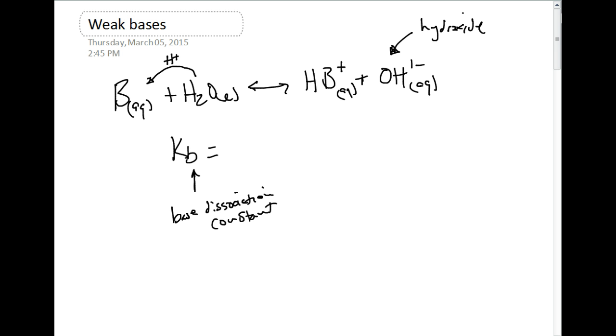For the base dissociation constant, we can write the expression just like we would write the expression for the KA. We can put products, so HB+, hydroxide ion, all over our base, and of course we're going to leave water out of that equation because it's pure liquid.